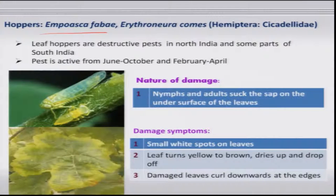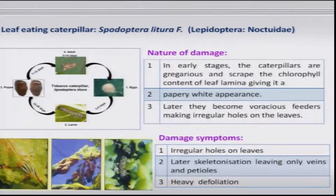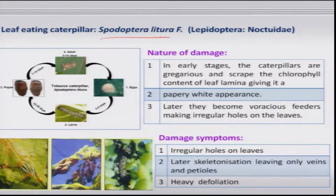Hoppers (Empoasca species) cause damage where both nymphs and adults are the damaging stage, especially on leaves; they suck sap resulting in yellowing of the leaf border and curling of the leaves. Some leaf eating caterpillars (Lepidoptera) occasionally come and cause damage, initially scraping the leaf and later causing defoliation, similar to their behavior on other crops.